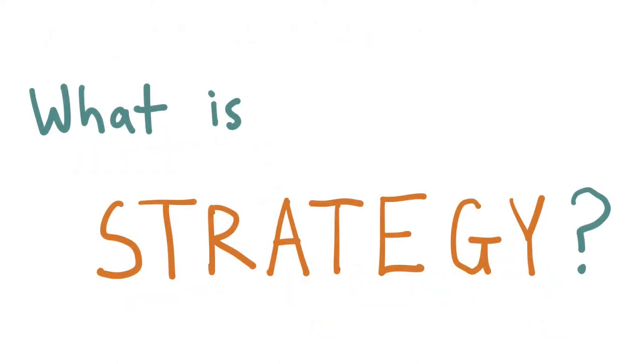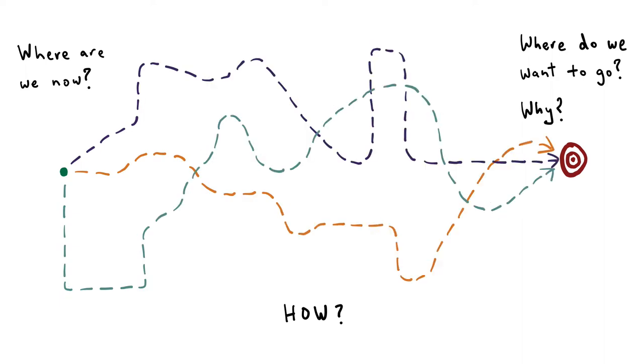At its core, strategy is a process of collective inquiry. You're trying to answer four questions: Where are we now? Where do we want to go? Why? How do we get there? Developing a strategy boils down to answering these four questions. That's it. If you spend half an hour at your desk answering these questions to the best of your ability, you have successfully completed a strategic planning process.